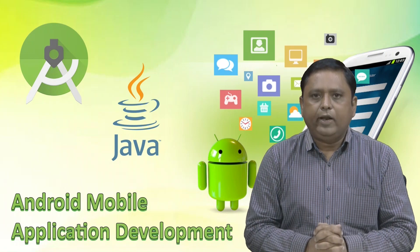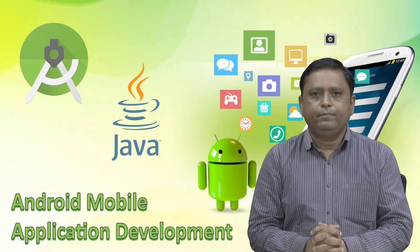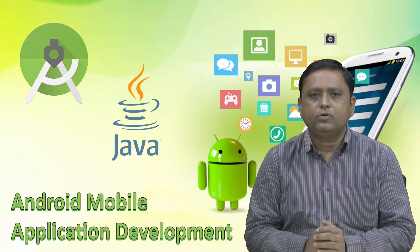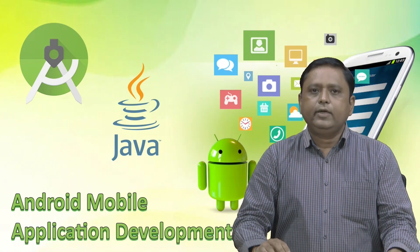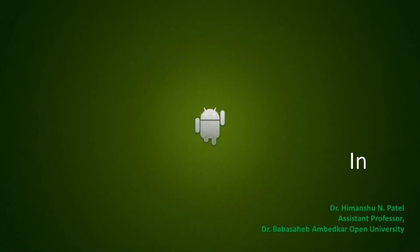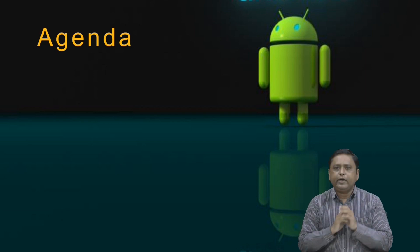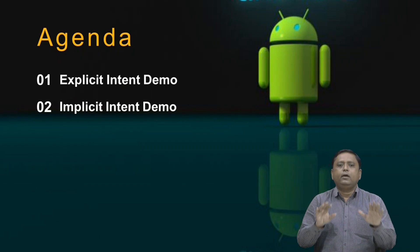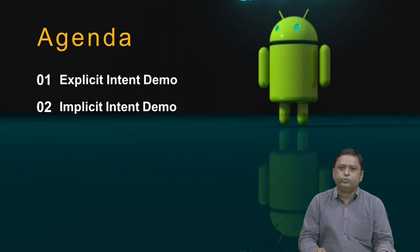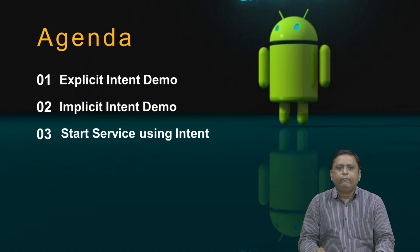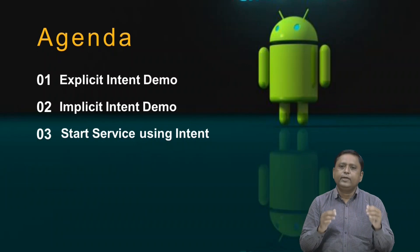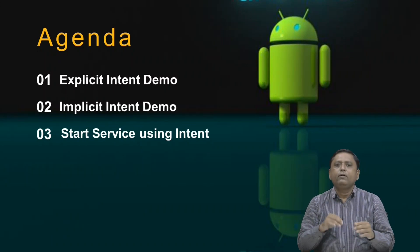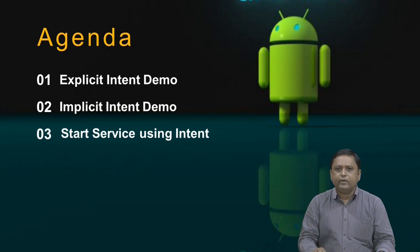In the last video lectures, we discussed about various types of intent and we took some examples of explicit as well as implicit intents. Now in this session, we will learn about intent, but we will take three practical demonstrations. First, we will take the demonstration of explicit intent. Second, we will take implicit intent demonstration through Android Studio, and in the last demonstration, we will see how to start a service using intent. In that last example, we will also learn how to create your own service. So we will take three demonstrations in this session.